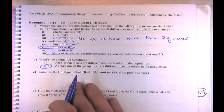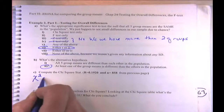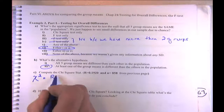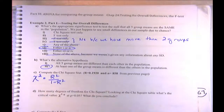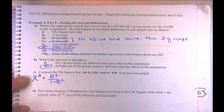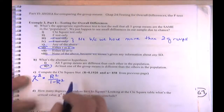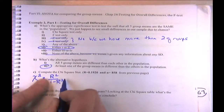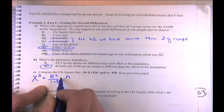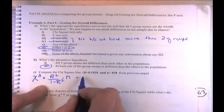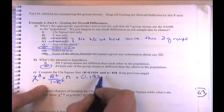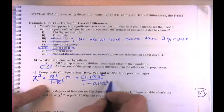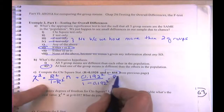Let's compute the chi-square. This is the same chi-square statistic we've used for regression: r-squared over 1 minus r-squared, times n. So in this case it's 0.192 squared divided by 1 minus 0.192 squared, all times our sample size of 858.